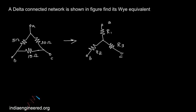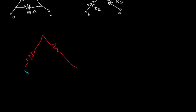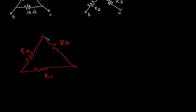We will first see how to convert from delta to Y, and we will also see how to convert in the opposite way. I'll first draw the delta network. Let's say this is R1. We have already — say this is Ra, this is Rb, and this is Rc. Now it's important that you have to understand how this equation works rather than memorizing it.